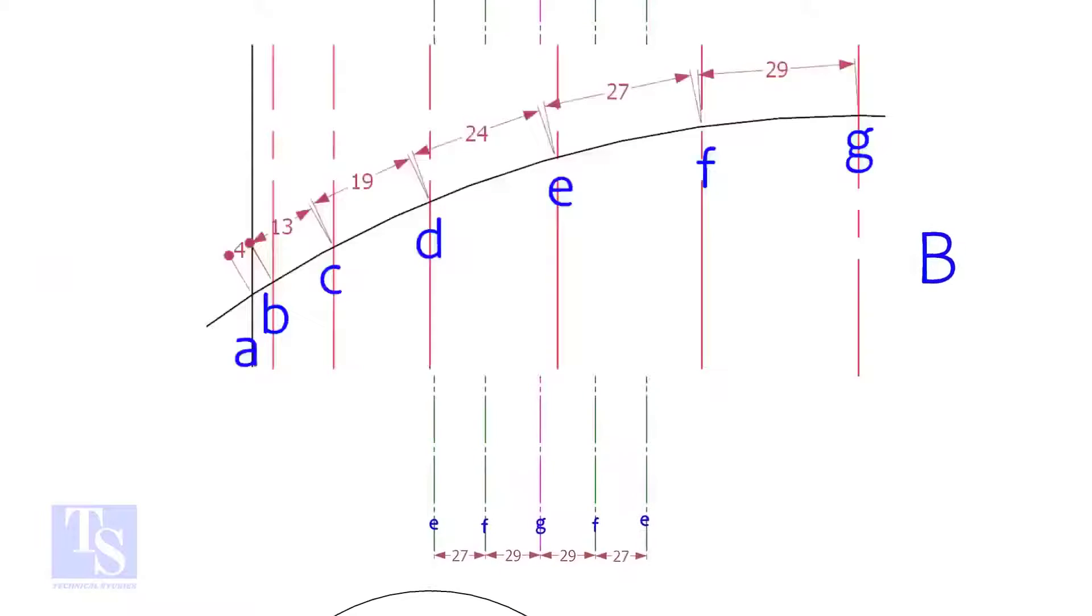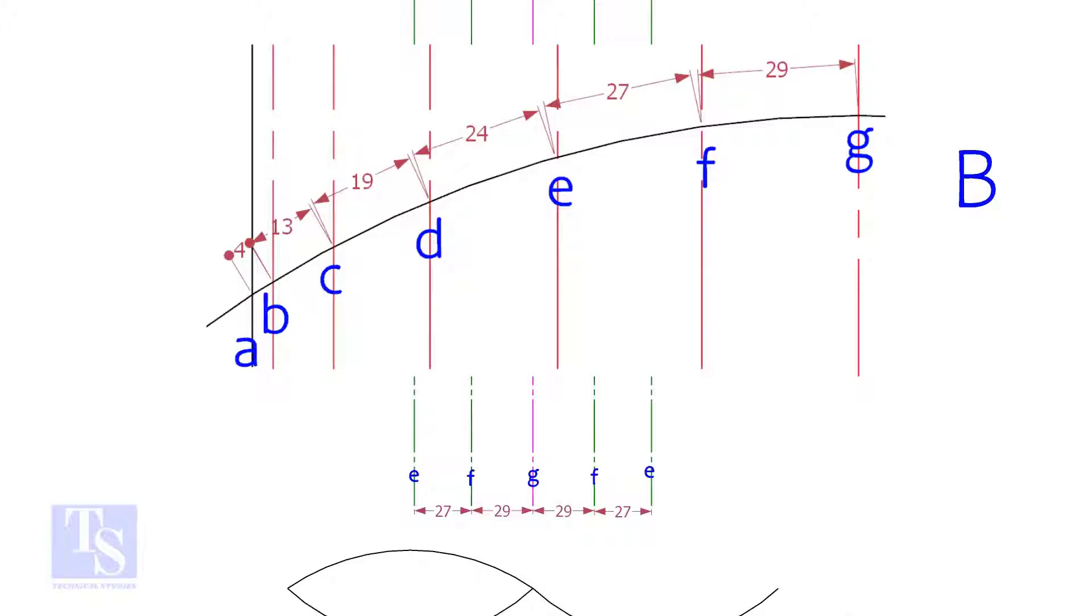Mark the measurements and draw straight lines on the curved side of the pipe on both sides.